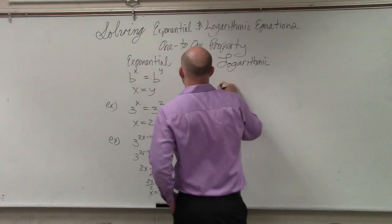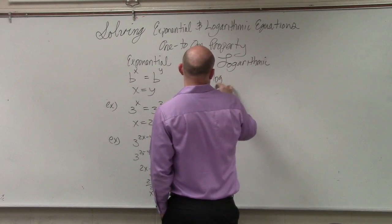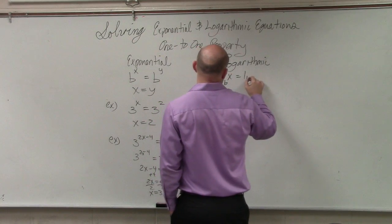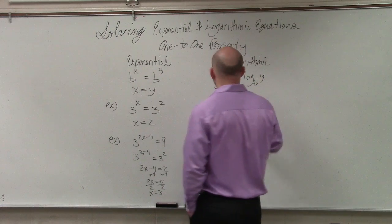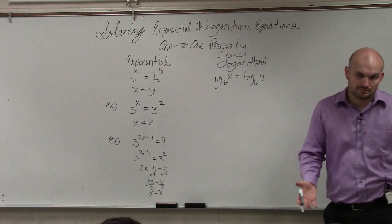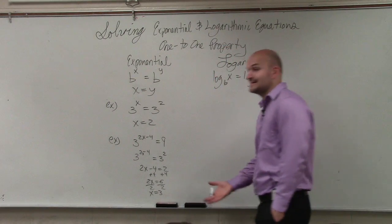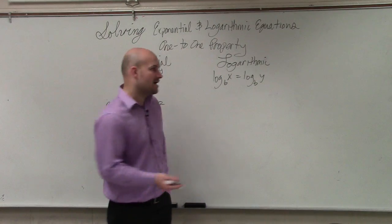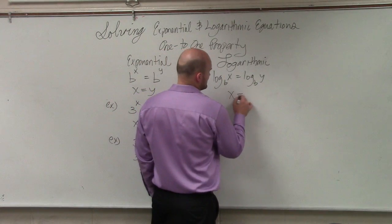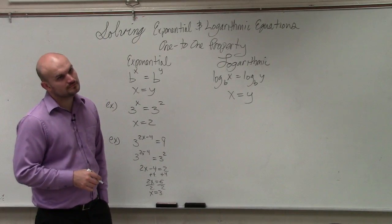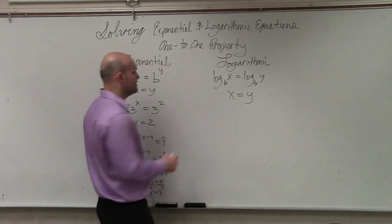All right. Logarithmic one-to-one property is pretty simple. Log base b of x equals log base b of y. That's it. If you have a logarithm with the exact same bases, x is equal to y. Therefore, you can say that x is equal to y.